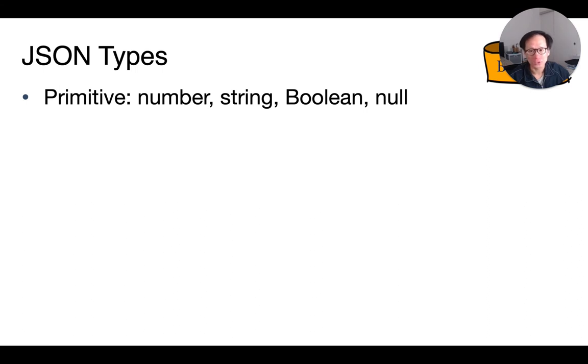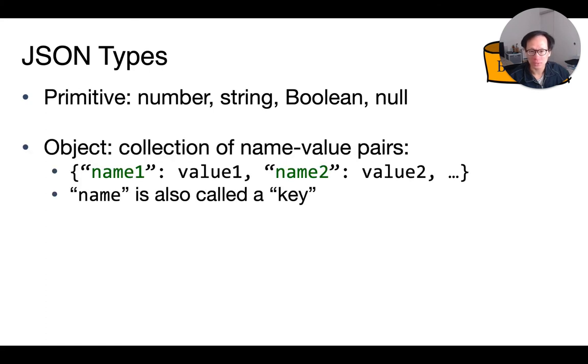Formally speaking, a JSON document stores either numerical values, strings, booleans, or the special null value just like in SQL. These values are collected into objects, and they are denoted using curly braces. Each value must be associated with a string key stored with quotation marks. We use a colon to separate the key from its value, and the key-value pairs are separated using commas.